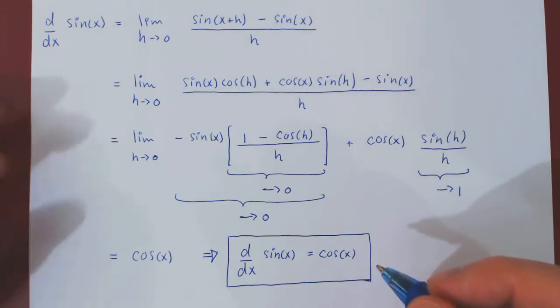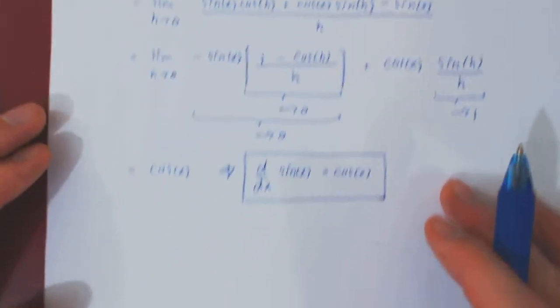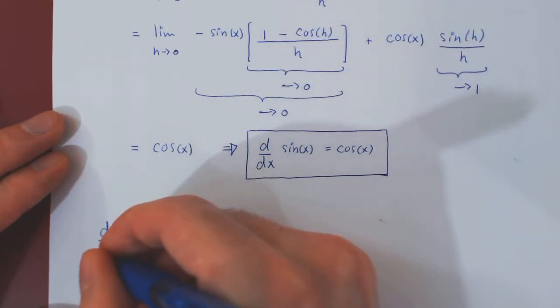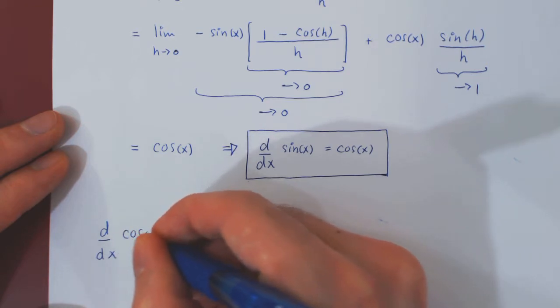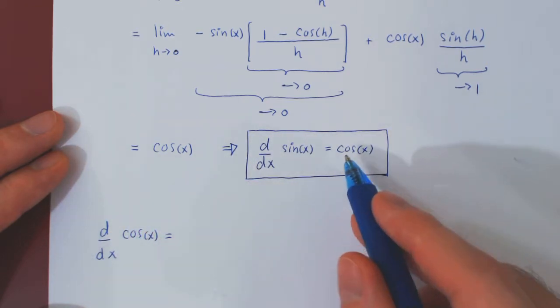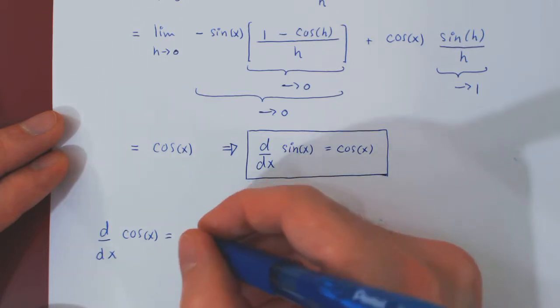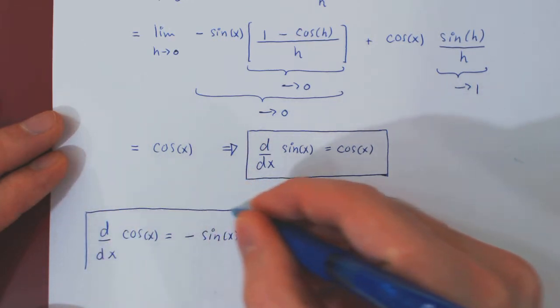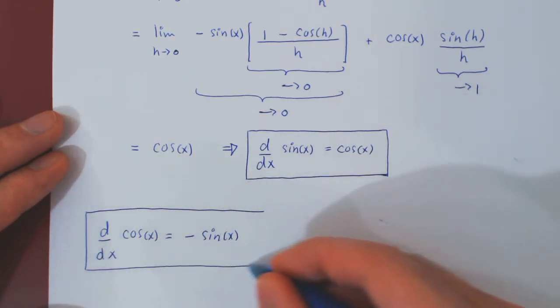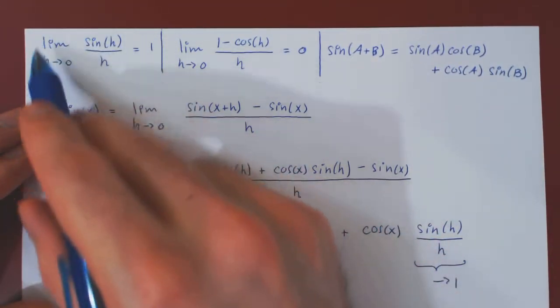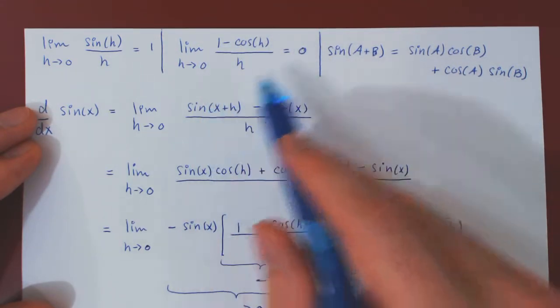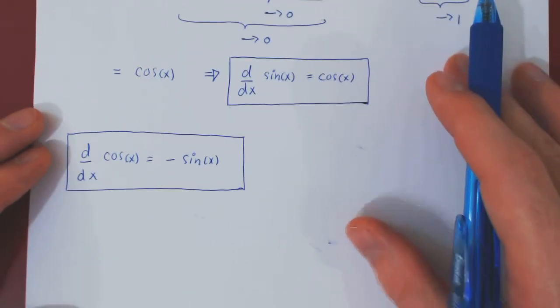Now, as an exercise, I want you to find the derivative of cos of x. And I want you to prove, using the exact same argument, that the derivative of cos of x is, well, it won't be exactly sin, but it will be negative the sin of x. And to prove this, you need three things. You will need the first two limits. And you will need a similar identity, not for sin, of course, but for cos.